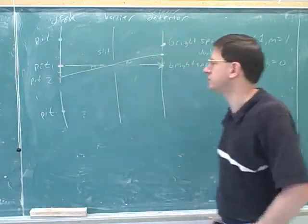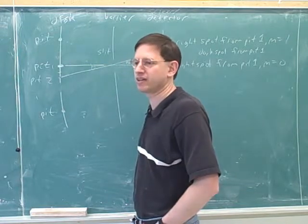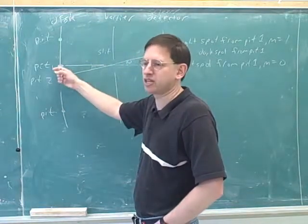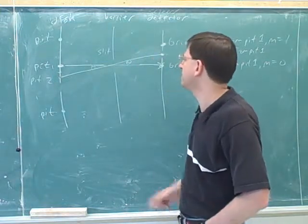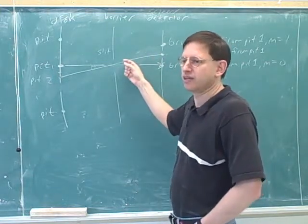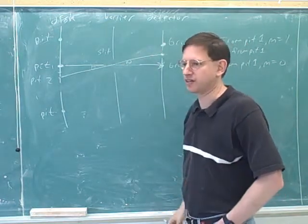You can see that theta is measuring the angular distance between the two pits. What do we want? Do we want a big theta or a small theta? Small, because that means we're crowding in as many pits as close to each other as possible. So this is putting a minimum value on theta. The smallest theta you can use is the theta that puts the light at the first dark spot over here.